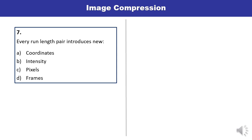Question 7: Every run length pair introduces new — coordinates, intensity, pixels, or frames? Every run length pair introduces new intensity. So B is the correct answer.